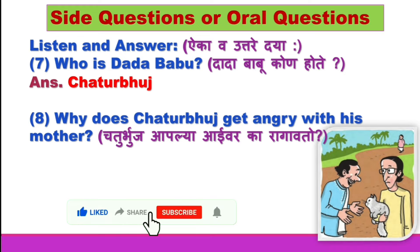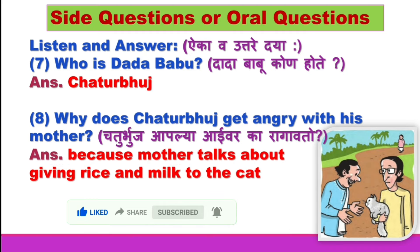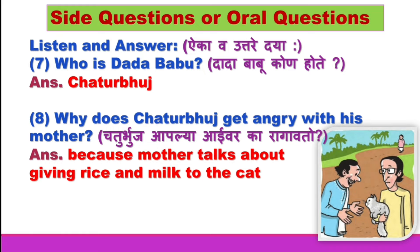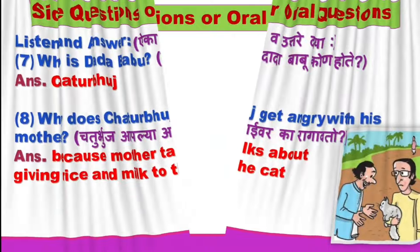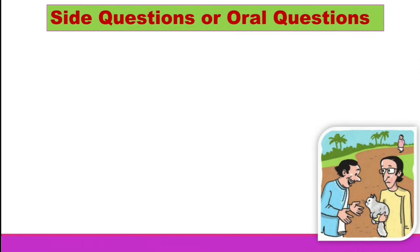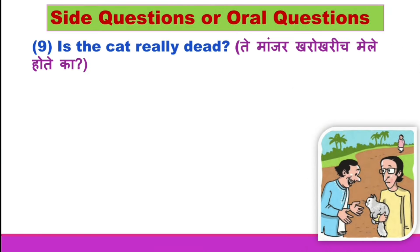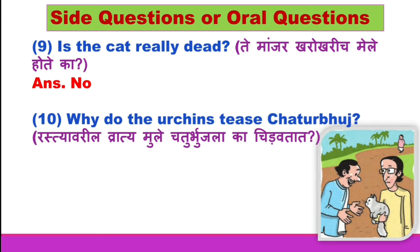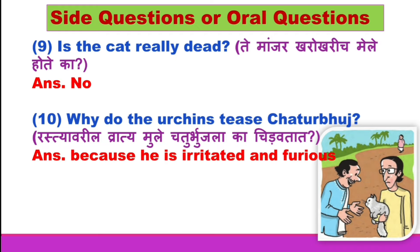Question 8: Why does Chaturbhuj get angry with his mother? Question 9: Is the cat really dead? The answer is no. Question 10: Why do the urchins tease Chaturbhuj? The answer is because he is irritated and furious.